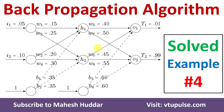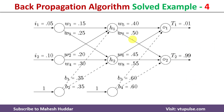Welcome back. In this video I will discuss the back propagation algorithm with the help of a solved example. This is solved example number four; links for other examples are given in the description below. In this case, we have been given a neural network with three layers: input layer, hidden layer, and output layer. There are two neurons in the input layer and two neurons in the hidden layer.